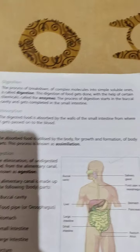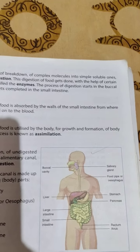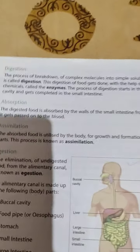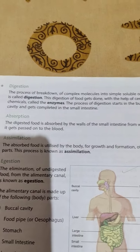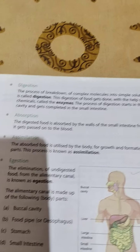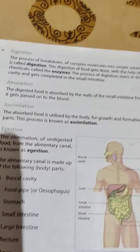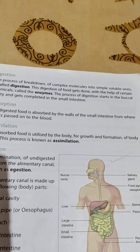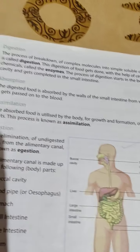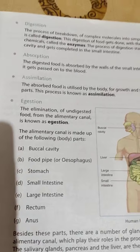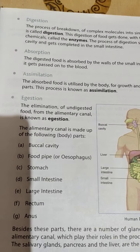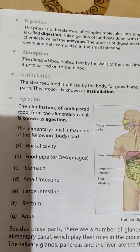The buccal cavity is the opening of the mouth, and digestion gets completed in the small intestine. Next is absorption — digested food is absorbed by the walls of the small intestine and then passed into the blood. Assimilation: the absorbed food is utilized for growth and formation of the body. The last step is egestion — elimination of the undigested food from the alimentary canal.